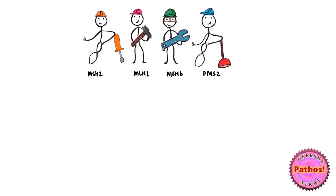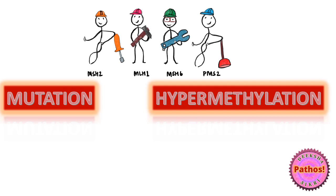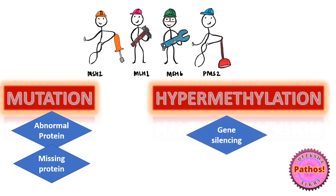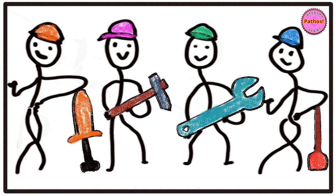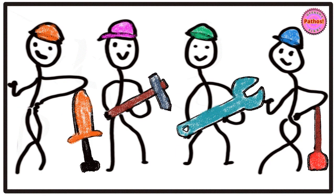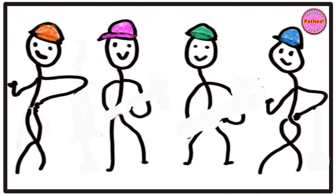Let's imagine a condition where either there is a mutation in any one of these genes or there is hypermethylation occurring in any one of these sequences. If there's a mutation, you'd get an abnormal protein or a missing protein. If there is hypermethylation, that would silence the gene, resulting in no formation of the protein. When this happens, our four MMR genes become useless — they've lost their tools. This is what we call MMR deficiency or MMR defects.